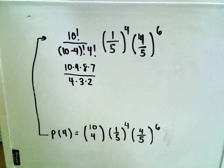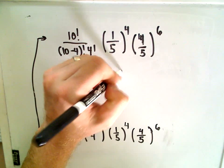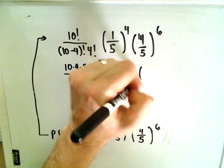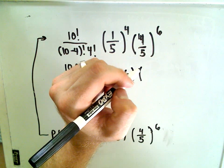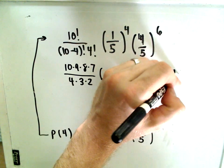I'm going to cheat here and use a calculator. So, let's see, one-fifth raised to the fourth power, which is just .0016. Okay, we probably could have got that one. Four-fifths, let's see, so .8 raised to the sixth power. That'll be .262144.